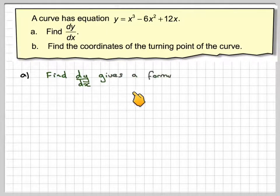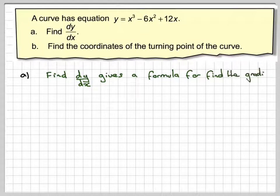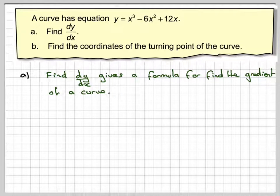Finding dy by dx gives a formula for finding the gradient of a curve. So once we've found the gradient of the curve, we can put a value of x and find the gradient at that point. The reason for having a formula is that the gradient changes for a curve, it's not the same value.